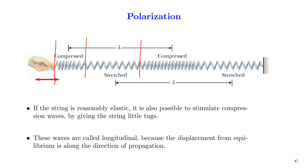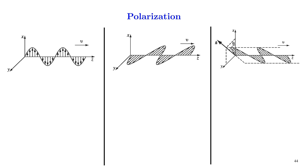So in this case, if we consider this as the equilibrium position, we can see that the displacement is along the direction of propagation. In this case, we define the wavelength of the wave as the distance between successive elongations or successive compressions. And we define the polarization of the waves as the direction along which the vibrations are occurring.